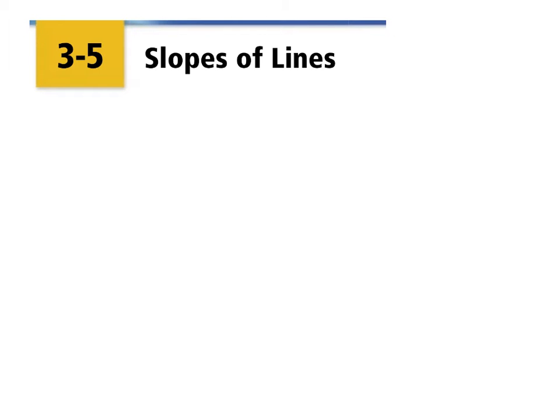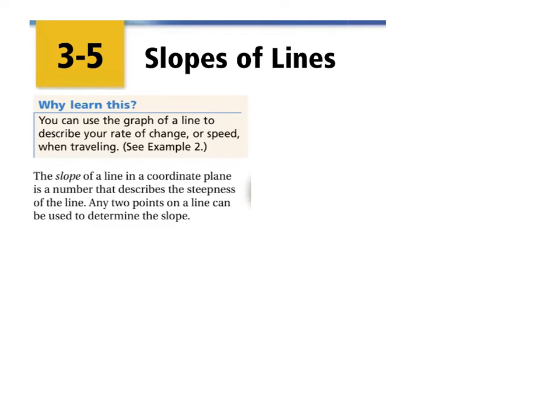All right, 8th graders, here's some great news. In section 3.5, about 90% of this is reviewed probably from at least 7th grade, most likely 6th grade, called slope of a line. Now, slope you've done before. I'm going to quickly go over this. At any point, you may skip over any of this that you already know. Now, why are we learning this?